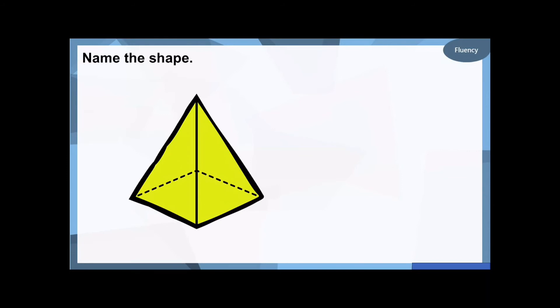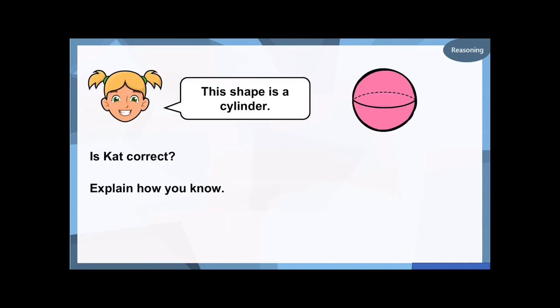And the next shape. Remember when we said that there are lots of these in Egypt? A pointy top, triangle sides. It begins with a P sound. Well done if you said it's a pyramid.